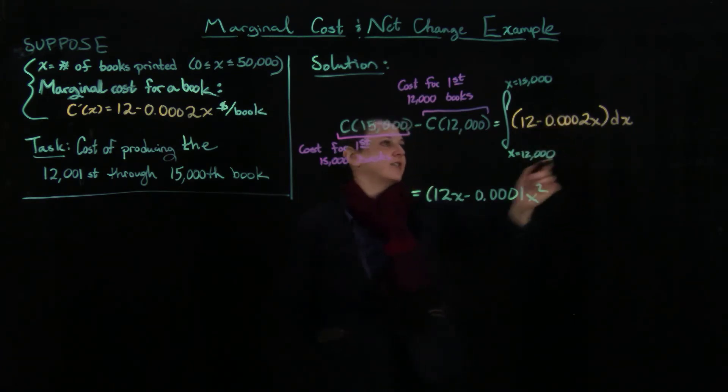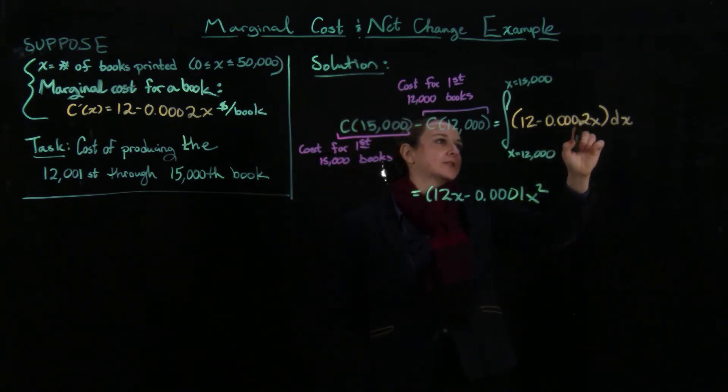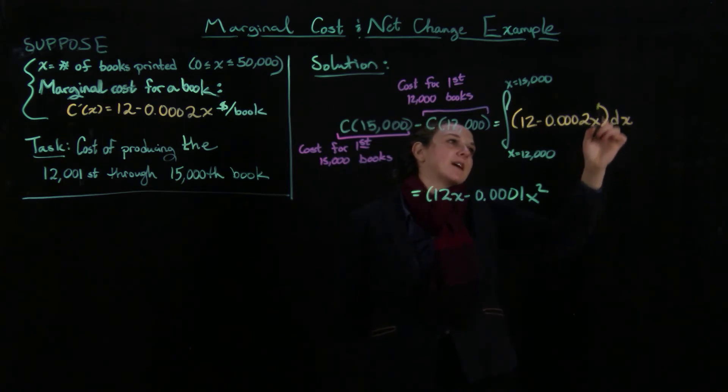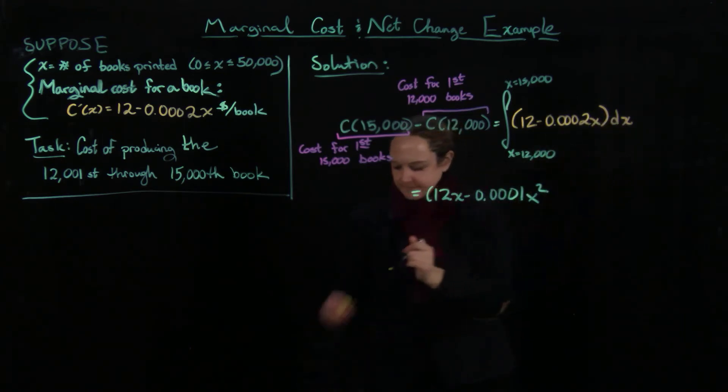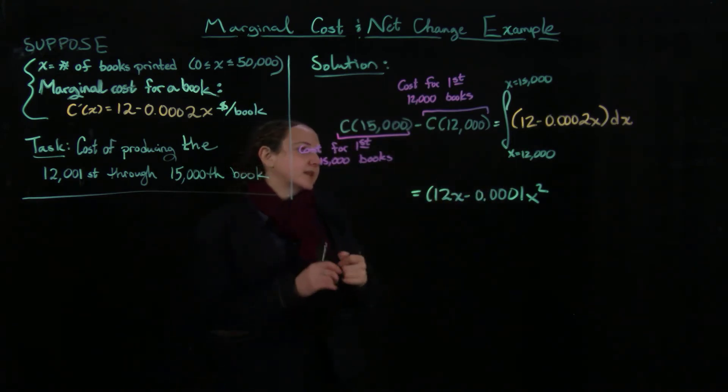So I'm taking 12x minus 0.001x squared. Because what do I get from here? I'm going to get, this 2x becomes x squared. So what ends up happening is we have x squared divided by 2. Maybe I'm just going to write this here for us so that we don't miss that. So how did I get this here?